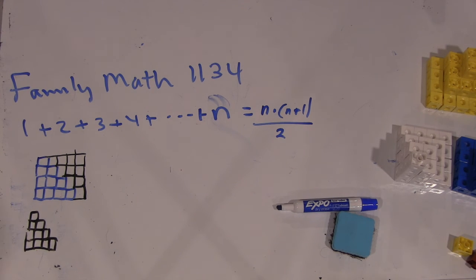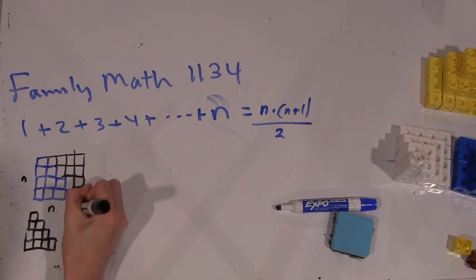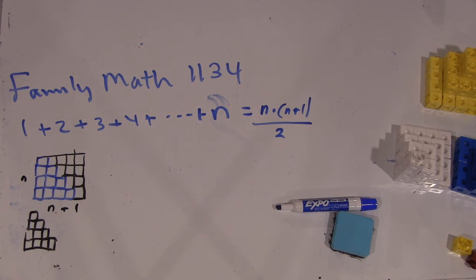And that area is, you have your n here, and then n plus 1. And that's the area of your rectangle. And since you created two of these shapes, you have to divide by two at the end. Okay. That is a great explanation.